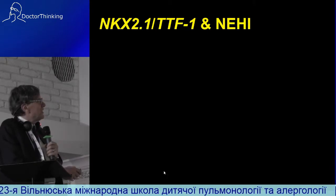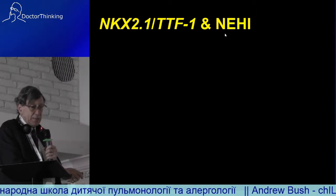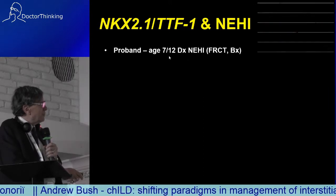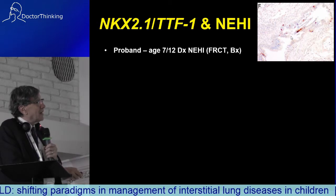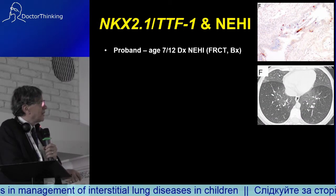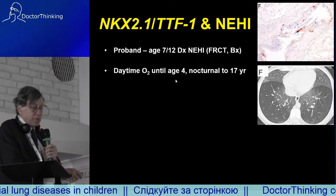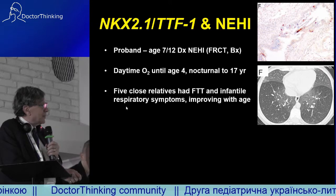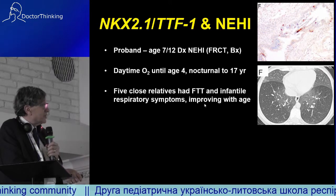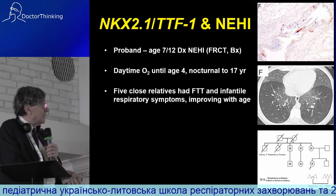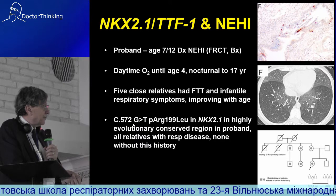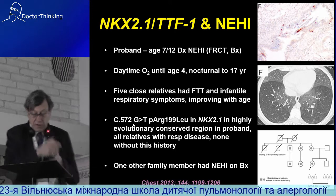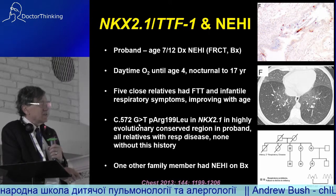The prognosis is generally good but there are underlying genetic causes including TTF1 mutations and FOXP1 mutations. Here is a family with TTF1 mutations and NEHI. The first child was diagnosed at age seven months on a CT scan and biopsy — both classical. This child was in oxygen during the day until age four, and at night until age 17. Five close relatives had similar presentations with respiratory distress and all had mutations in TTF1 in an evolutionarily conserved region. So if you see NEHI that is going on for a long time, you must think about TTF1 mutations.